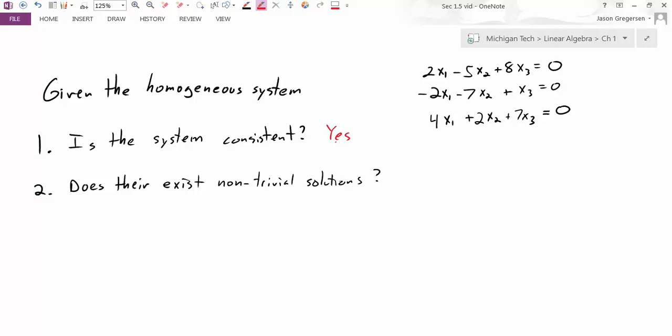The real question is, does there exist non-trivial solutions? So to do that, we're going to take our system and write out the augmented matrix. Now that we have the augmented matrix, we're going to row reduce to REF so that we can identify the pivot positions. If we have any columns without pivot positions, then we know there are free variables and that there will be non-trivial solutions.